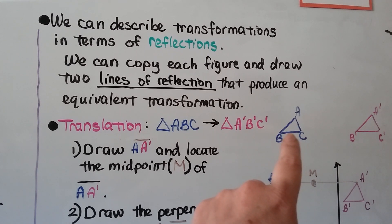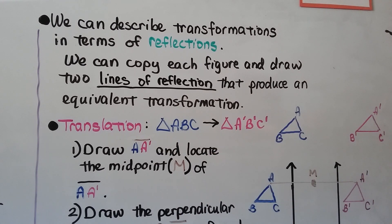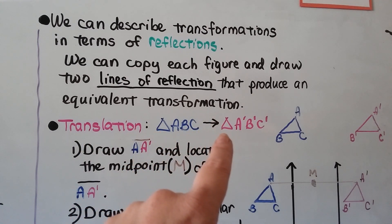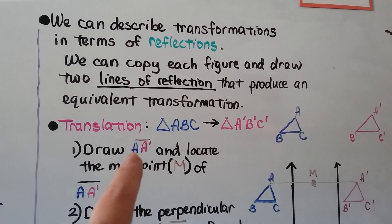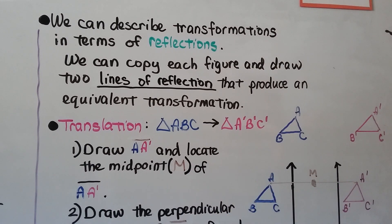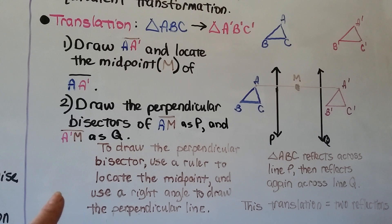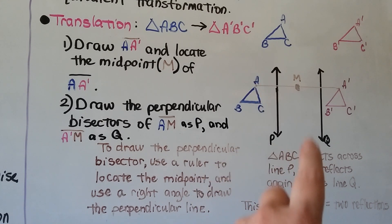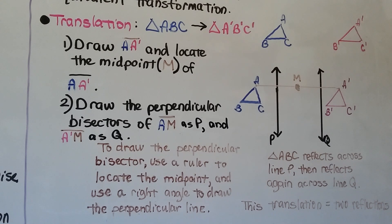We can copy each figure — we've got a, b, c and a prime, b prime, c prime — and draw two lines of reflection that produce an equivalent transformation. For a translation of triangle ABC to triangle A prime B prime C prime: first draw segment A A prime and locate its midpoint M. Then draw the perpendicular bisectors of segment AM — call it line p — and of segment A prime M — call it line q. Triangle ABC reflects across p, then reflects again across line q. This translation is equivalent to two reflections.